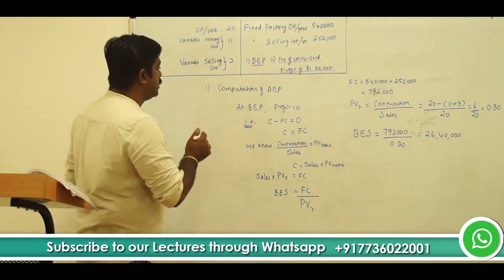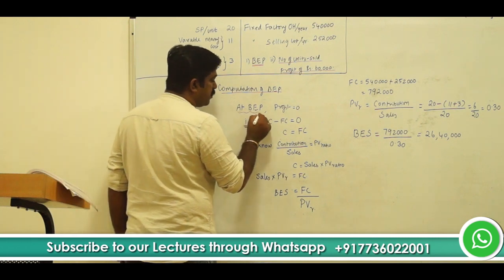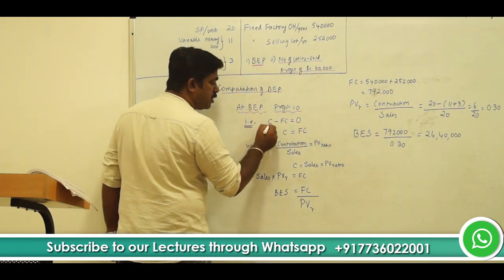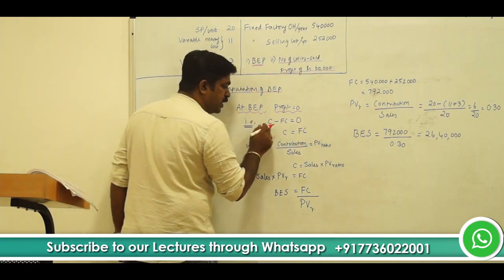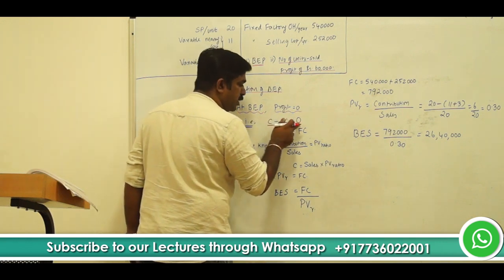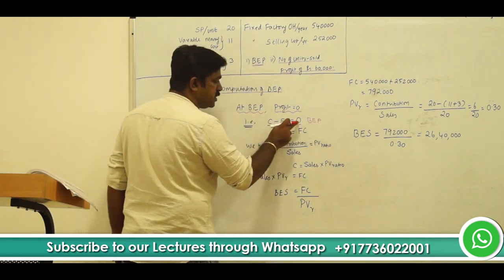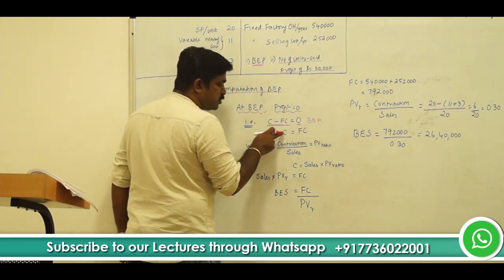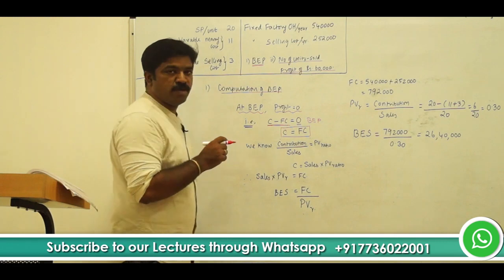Now, let's see how to proceed with the computation of break-even point. At break-even point, profit is going to be 0. Why? Because contribution — which is sales minus variable cost — exactly covers your fixed cost. So, from contribution, if you subtract fixed cost, you get nothing; it is 0. We call it break-even point. So, C minus FC equals 0, which can be rewritten as C equals FC. That is, contribution is equal to fixed cost at break-even point.